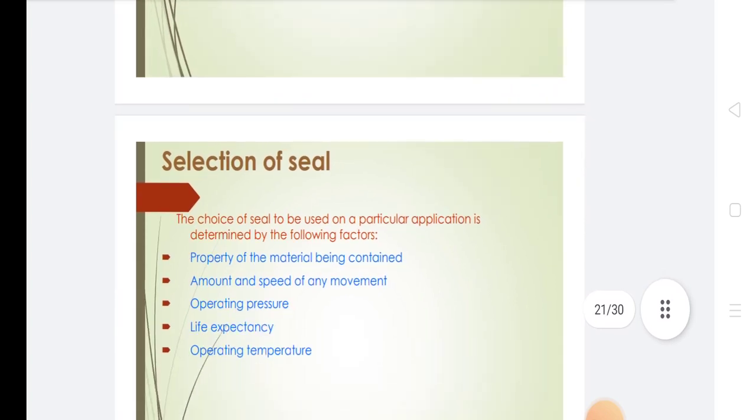Selection of seal: The choice of seal for a particular application is determined by the following factors: properties of the material being contained, amount and speed of any movement, operating pressure, life expectancy, and operating temperature.